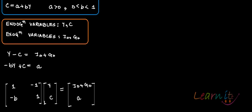To solve this, the best approach is to collect all like terms together — taking all endogenous variables to the left side of the equations and the exogenous variables or constants to the right side. So the first equation becomes: Y − C = I₀ + G₀, where Y and C are the only endogenous variables. The second equation becomes: −bY + C = a.